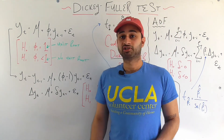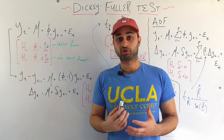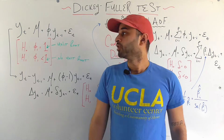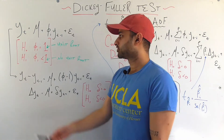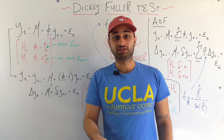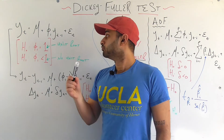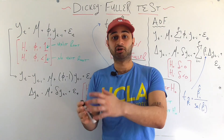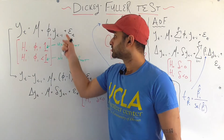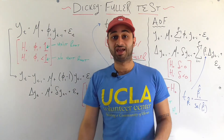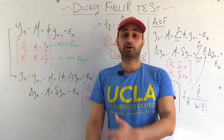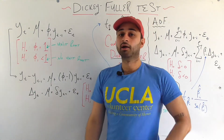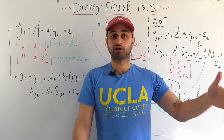The Dickey-Fuller test basically assumes that our time series in question is an AR(1) or autoregressive 1 process. In a nutshell, that just means that our time series y_t is equal to some constant mu plus some coefficient phi_1 times that same time series lagged 1 period. This is the crucial part which makes it an AR(1) model — our time series is a linear function of itself lagged 1 time period in the past.